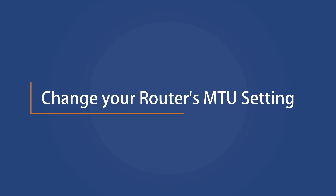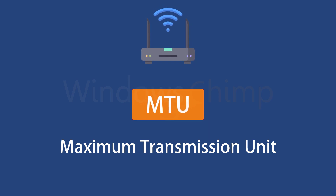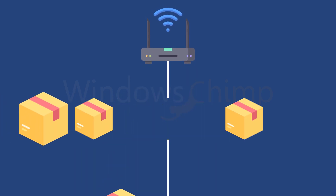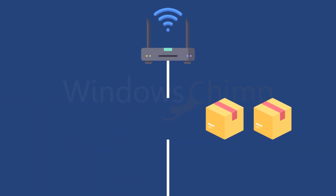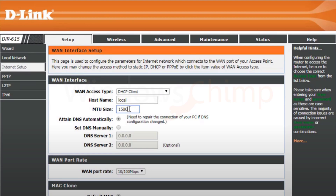Change your router's MTU settings. MTU, or Maximum Transmission Unit, is a value that determines the maximum size of packets that can be transferred in a single transmission over an IP network. Routers use this value to decide which packets to forward and which ones to drop. If the MTU size is not set correctly, it can cause problems with the internet connection speed. To set the correct MTU, log into your router and locate the MTU setting — it's usually in Admin or WAN settings. Set a smaller value than the current one, but greater than 1400. Save the changes and restart your router.